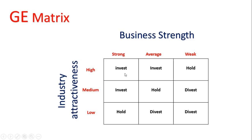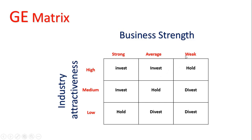The three strategic options are: invest, hold, or divest. Divest means you sell that unit to another firm — for example, if you're running three units and one is making a loss, you sell it rather than just shutting it down. If your business strength is strong and attractiveness is also high, that's the ideal situation — you should invest. If attractiveness is high and strength is average, you should also invest.